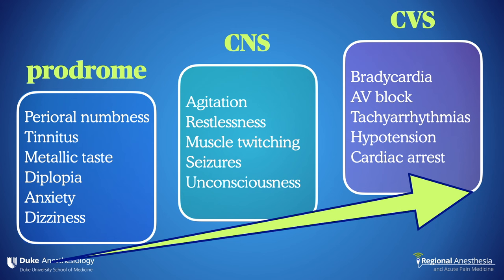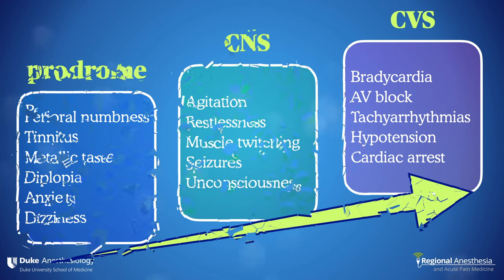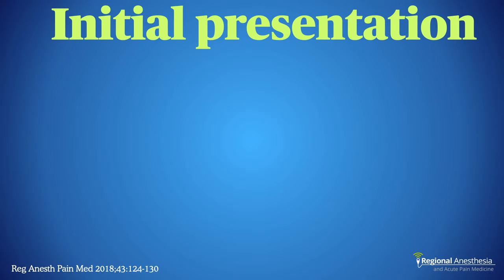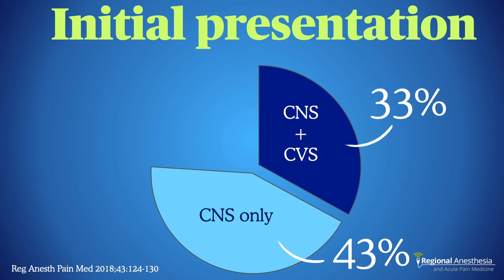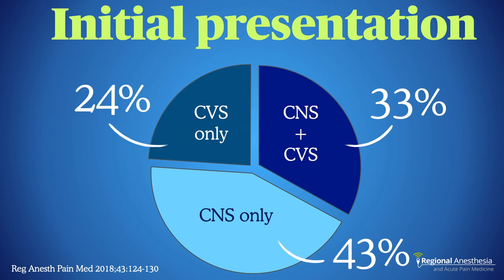Only cases with the highest plasma levels would develop arrhythmias and cardiac pump failure. It's important to understand that while the syndrome can present in that specific order, it certainly doesn't have to. More contemporary data show that just under half of all cases present initially with neurologic signs and symptoms, a third present with both neurologic and cardiovascular manifestations simultaneously, and about a quarter present with only cardiac signs — which is particularly dangerous.